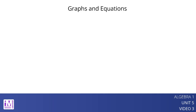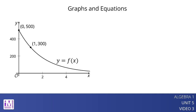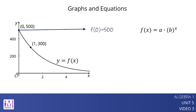If we have enough information about a graph representing an exponential function f, we can write a corresponding equation. Here is a graph of y equals f of x. An equation defining an exponential function has the form f of x equals a times b to the x. The value of a is the starting value, or f of 0, so it is the y-intercept of the graph. We can see that f of 0 is 500 and that the function is decreasing.